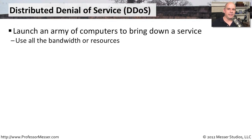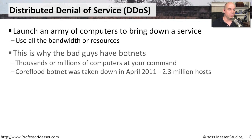The bad guys know that it's very easy to block a single system out on the internet that's trying to bring you down with denial of service. That's why they've created distributed denial of service functionality — many different systems on the internet all working together to try to bring you down. It becomes a lot more difficult to filter that out because it's not a single IP address or even a single IP subnet. It's stations and systems from all over the world using all available bandwidth to bring down your systems.